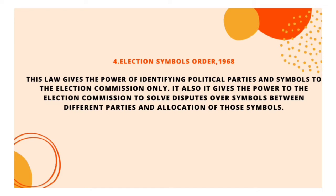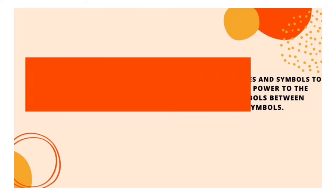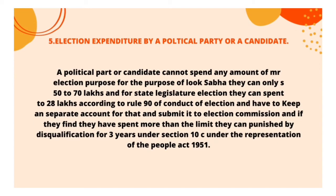The Election Symbol Order 1968 gives the power of identifying political parties and symbols exclusively to the Election Commission. It also gives the Election Commission the power to resolve disputes over symbols between different parties and the allocation of those symbols.